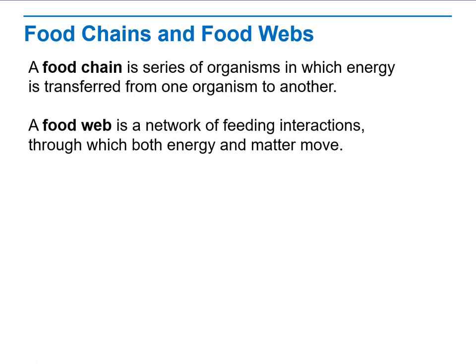Food chain and food web — what is the definition for food chain, and what is the definition of food web, and how they are different from each other. A food chain is a series of organisms in which energy is transferred from one organism to another — only from A to B. In a food web, it is a network of feeding interactions, meaning you have more than one pathway through which both energy and matter move.